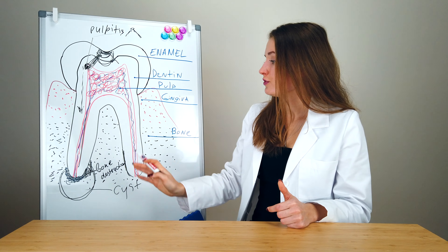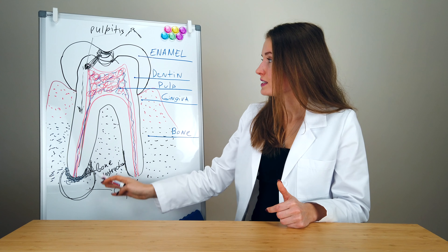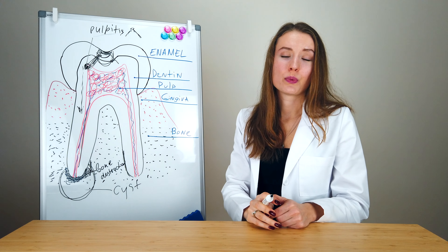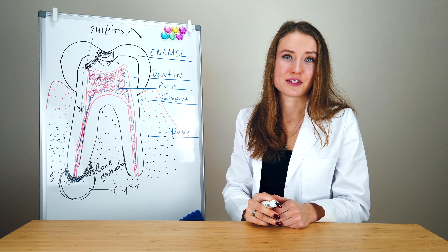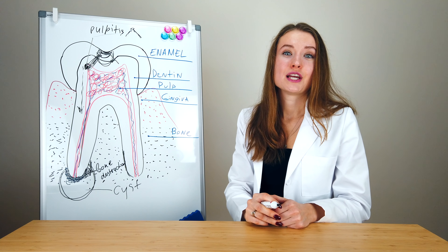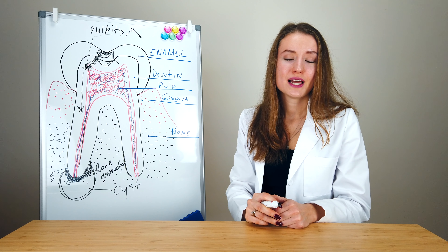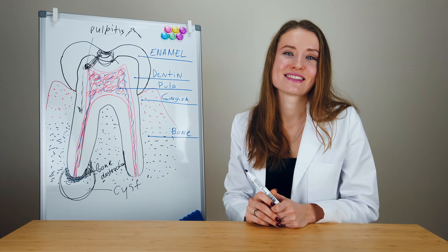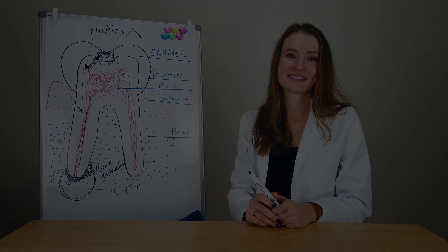A cyst is more complicated to treat than periodontitis or pulpitis. So for each of these cases we have to take an x-ray. We also have to take an x-ray if we are going to do a tooth extraction, because we have to know the position of the tooth in the alveolar bone.